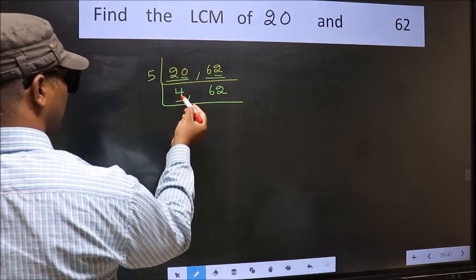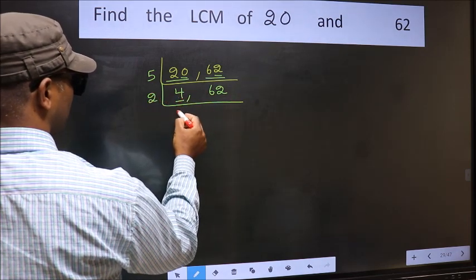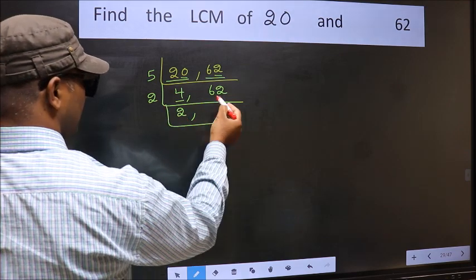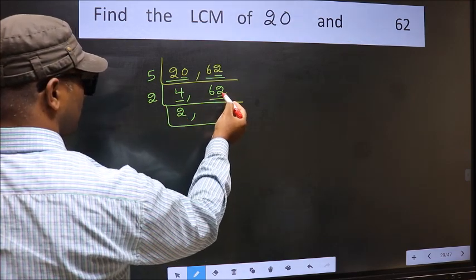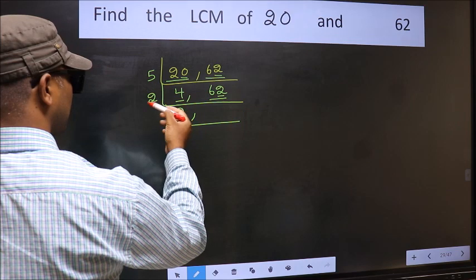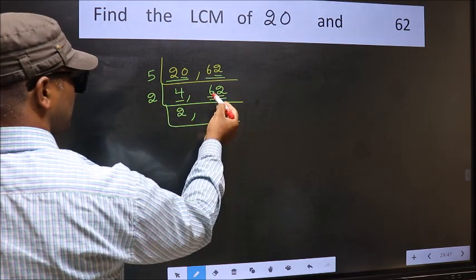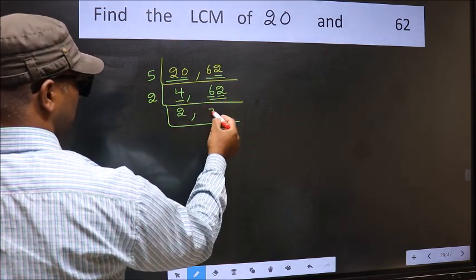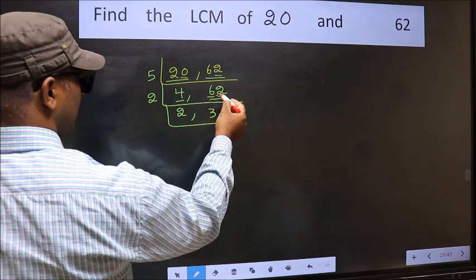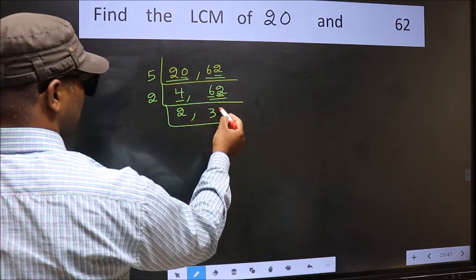Now here we have 4. 4 is 2, 2 is 4. The other number 62 last digit 2 even. So this is divisible by 2. First number 6. When do we get 6 in 2 table? 2, 3 is 6. The other number 2. When do we get 2 in 2 table? 2, 1 is 2.